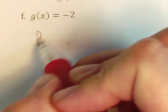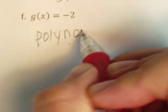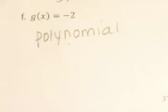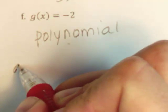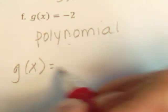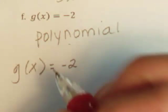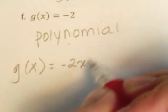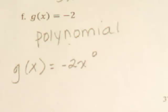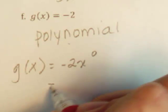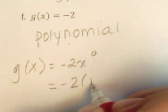And for letter F, this actually is a polynomial. Even though it does not have any variables. Now, remember we said for it to be a polynomial, you have to have non-negative integer exponents. So looking at g of x, I can actually write this as -2 times x to the 0 power. Because remember that anything to the 0 power is just 1.